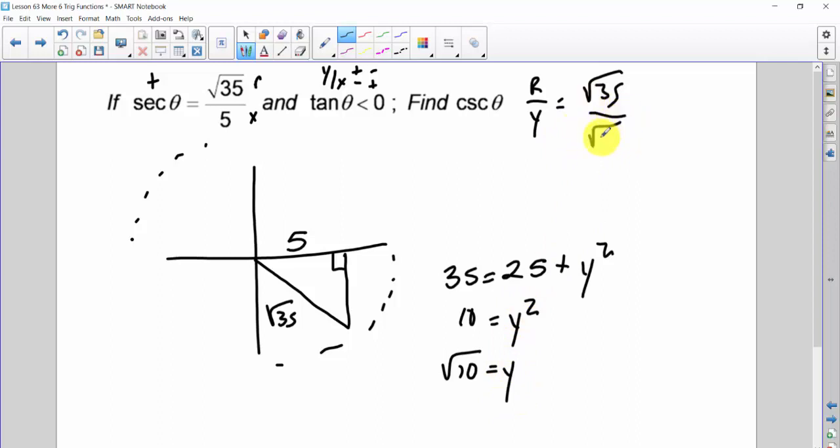So, we've got this. This is going to reduce to root 7 over root 2. Rationalize to root 14 over 2 for cosecant. However, because this y is in the fourth quadrant, this has got to be negative. So I go back and throw a negative here, negative here, and negative here, and I'm done.